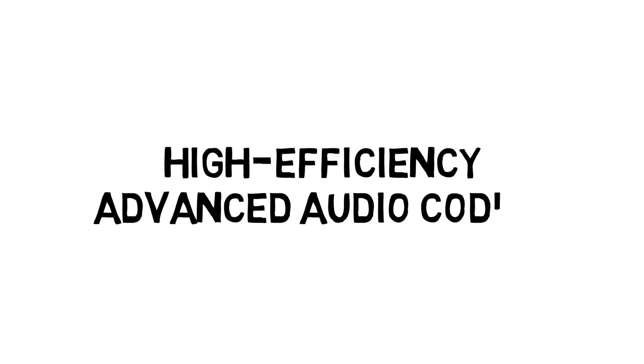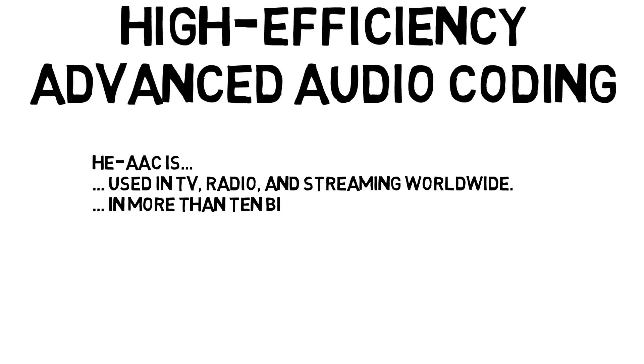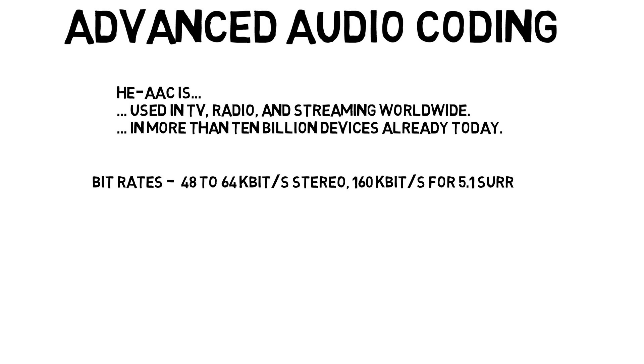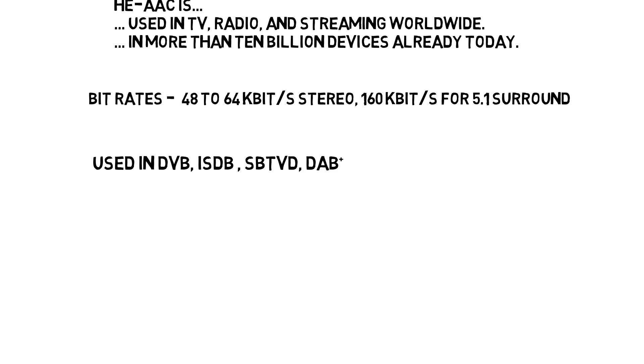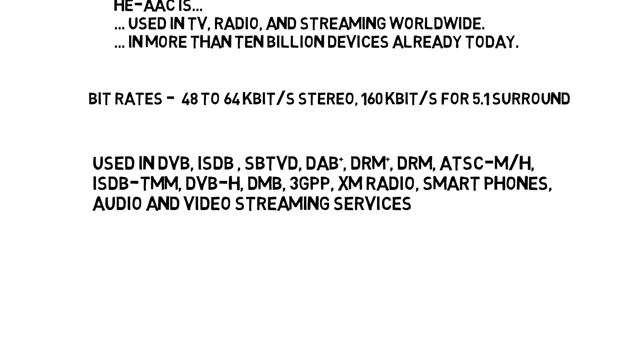So the second generation of AAC was HEAAC. HEAAC took advantage of a little fact: when we actually do the audio coding of an audio program, we're doing time-to-frequency transforms in order to operate in the frequency domain. And time-to-frequency transforms are linear in frequency. So when we take in a time signal, we perform a Fourier or similar transform to transform it into frequencies. There are just as many frequency lines between 0 and 10,000 Hertz as there are between 10,000 and 20,000 Hertz — completely linear.